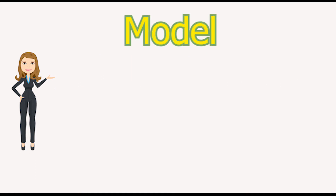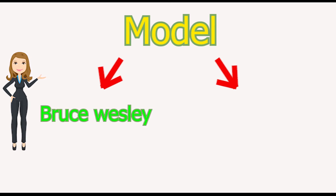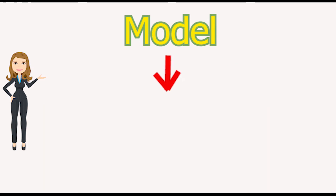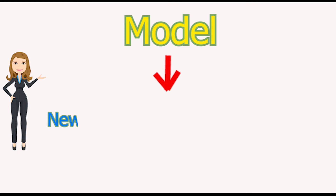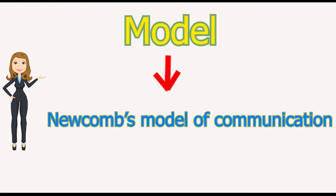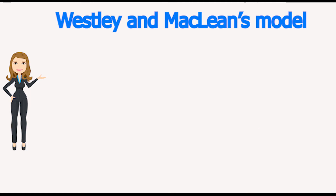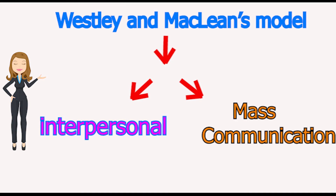This model was proposed by Bruce Wesley and Malcolm S. McLean Jr. This model is also known as the gatekeeping model. And this model was an adaptation from Newcomb's model of communication. The Wesley and McLean's model can be applied in two contexts: the first one is interpersonal and the second one is mass communication.